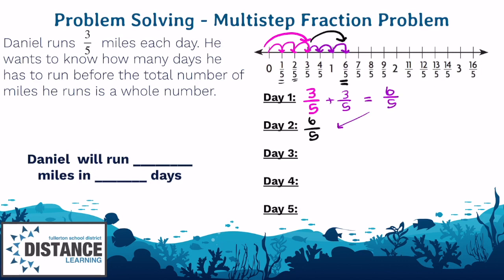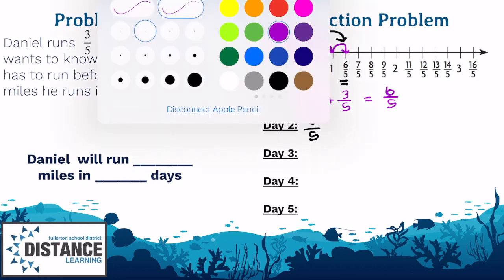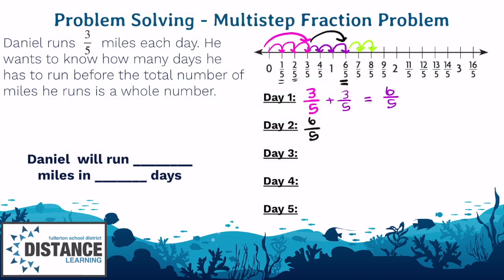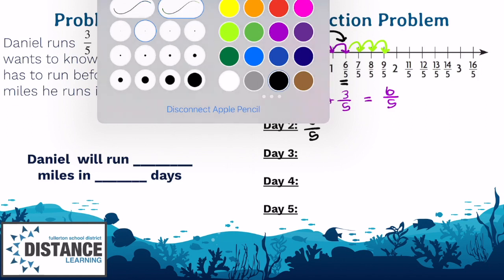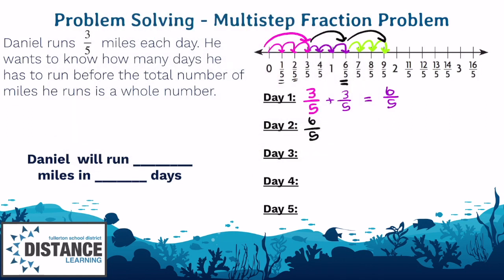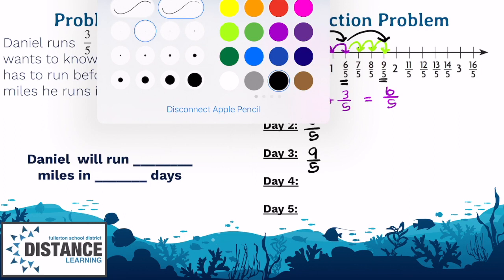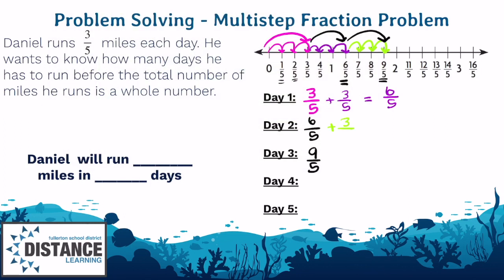So day three, Daniel moves another three-fifths. We'll model that in green. So he's going to take three steps forward. That means in day three, he lands on nine-fifths. And if you want to model that with using numbers, we know that he moved three-fifths. So we add three-fifths. And six plus three is nine-fifths. Since nine over five is still not a whole number, we have to move forward again.